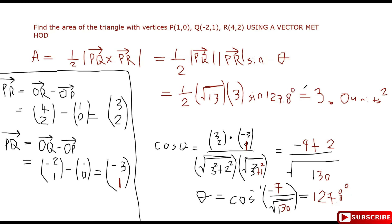With the correction, PR magnitude is square root of 13 and PQ magnitude is square root of 10. The area is a half times the square root of 130 times the sine of 127.8 degrees. Working that out, I get 4.5. So the area is 4.5 square units. That matches the Geometer's Sketchpad result.